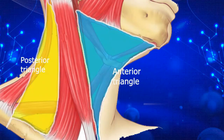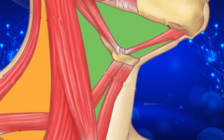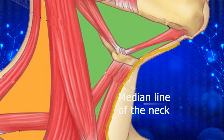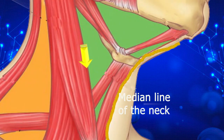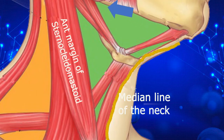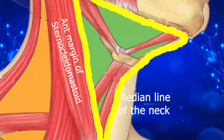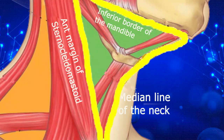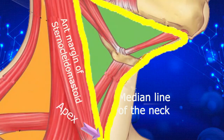We will start with the anterior triangle of the neck. This triangle is defined by the following borders: anteriorly it is bounded by the median line of the neck; posteriorly by the anterior margin of the sternocleidomastoid; superiorly by the inferior border of the mandible and its projection to the mastoid process, that's the imaginary line connecting it to the mastoid process. The superior border of this triangle forms the base of this triangle while the apex is formed at the manubrium sternum.